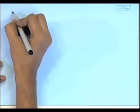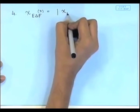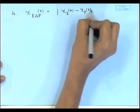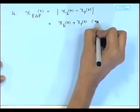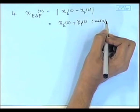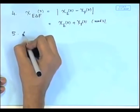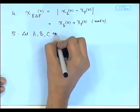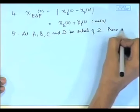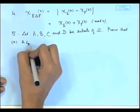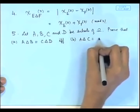If we consider the indicator function of the symmetric difference, it equals the absolute difference between the indicator functions of the two sets. An alternative way of stating this is that it equals chi_E plus chi_F where the sum is taken modulo 2. An additional exercise: if we consider sets a, b, c, d, then a delta b equals c delta d if and only if a delta c equals b delta d.